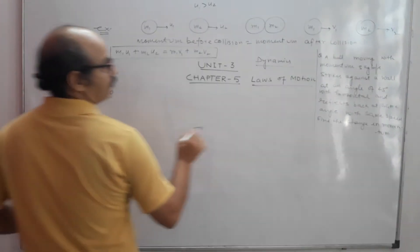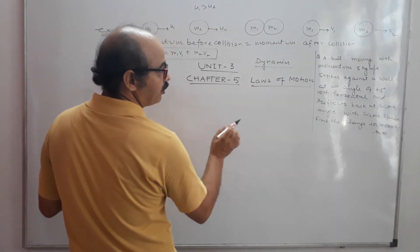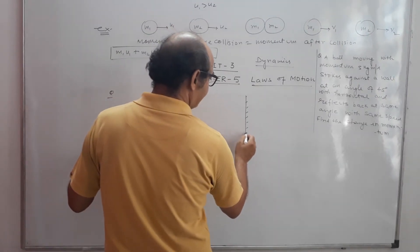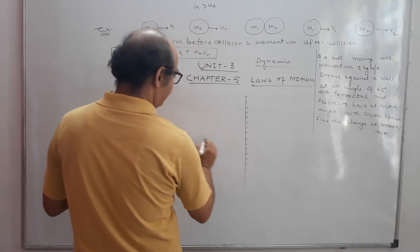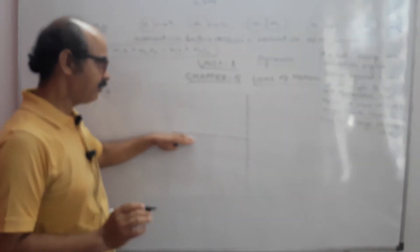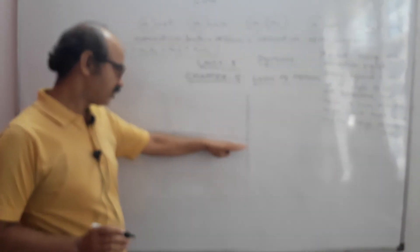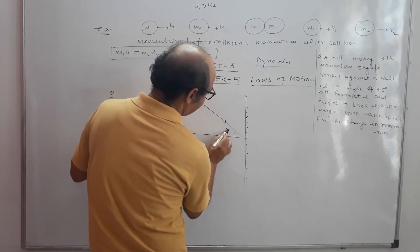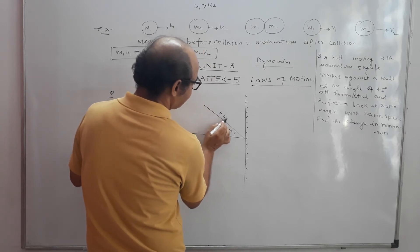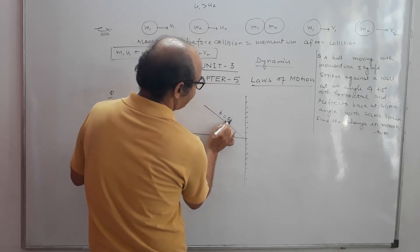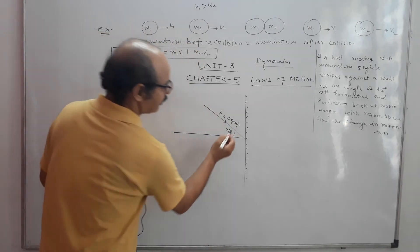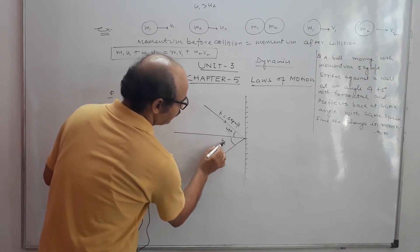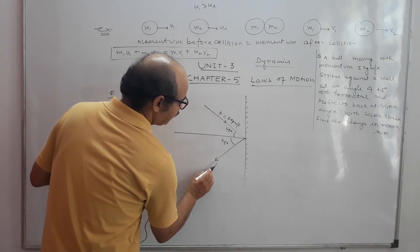How to solve this: suppose this is a wall — the wall is vertical and the surface is horizontal. The ball strikes at 45 degrees from the horizontal, so this angle is 45 degrees, and its momentum P is equal to 5 kg·m/s. It reflects back at the same angle and same speed — so the speed is the same, mass is the same, and therefore the magnitude of momentum is also the same: 5 kg·m/s.